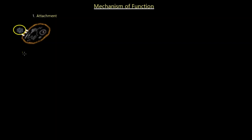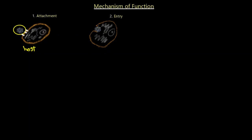The virus attaches with its projections onto the host cell. The next stage is entry: either the entire virus including the capsid enters the cell, or it just injects its genetic material inside. There are many theories about how each virus accomplishes this injection.